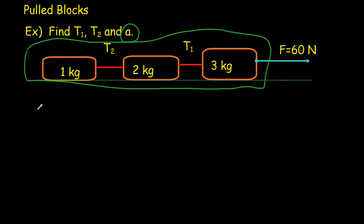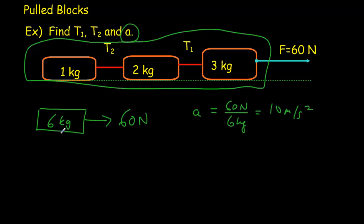Because what we really have here is a 1 plus 2 plus 3, a 6 kilogram mass being pulled by 60 Newtons. So our acceleration would be 60 Newtons of force acting on 6 kilograms of mass giving an acceleration of 10 meters per second squared. Once we've got that acceleration, we know each of the blocks has the same acceleration of 10 and so it's quite easy to find the tensions.